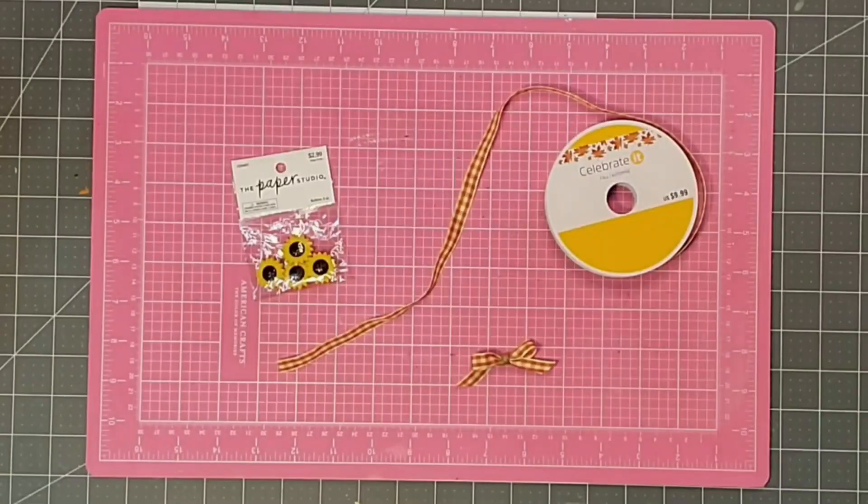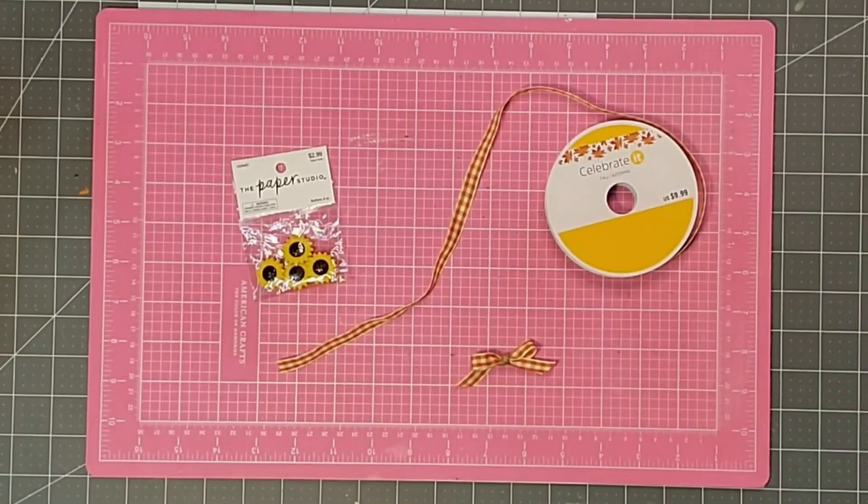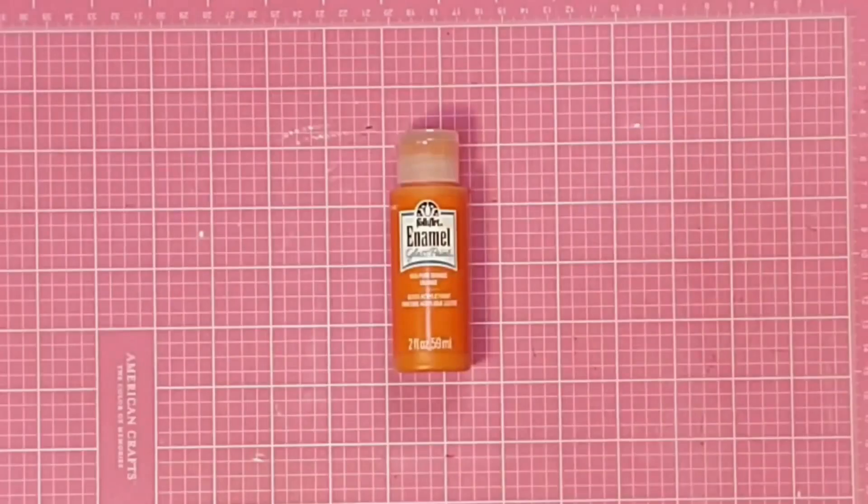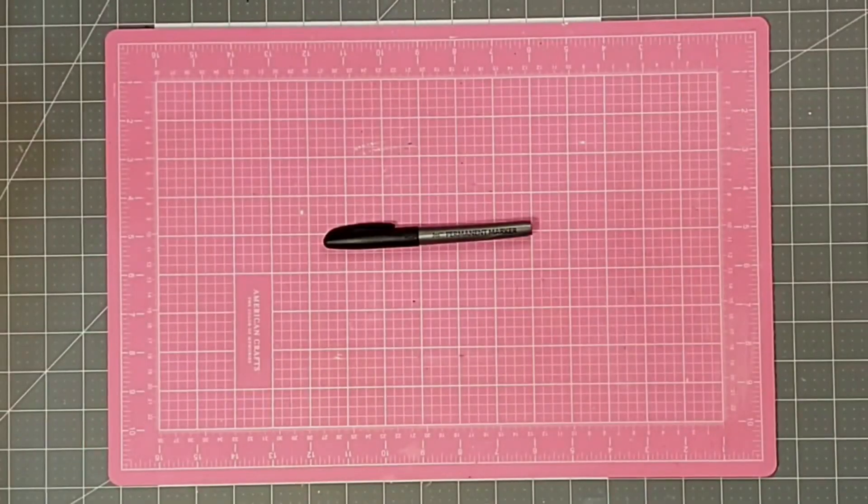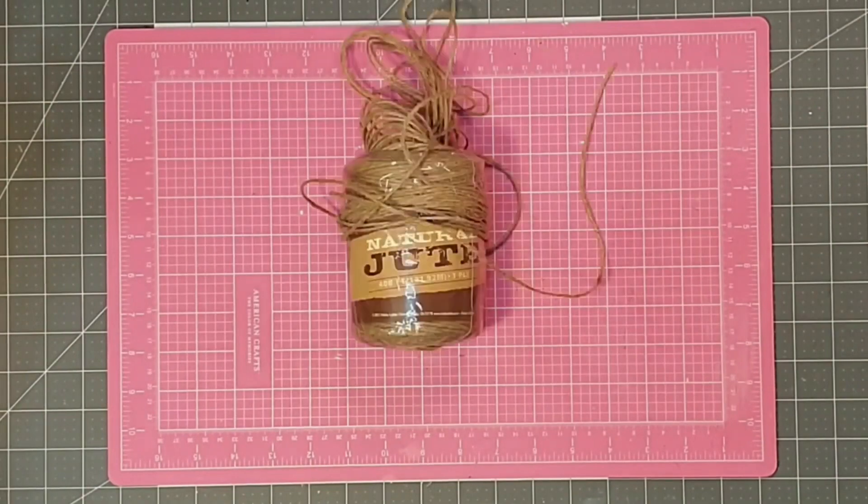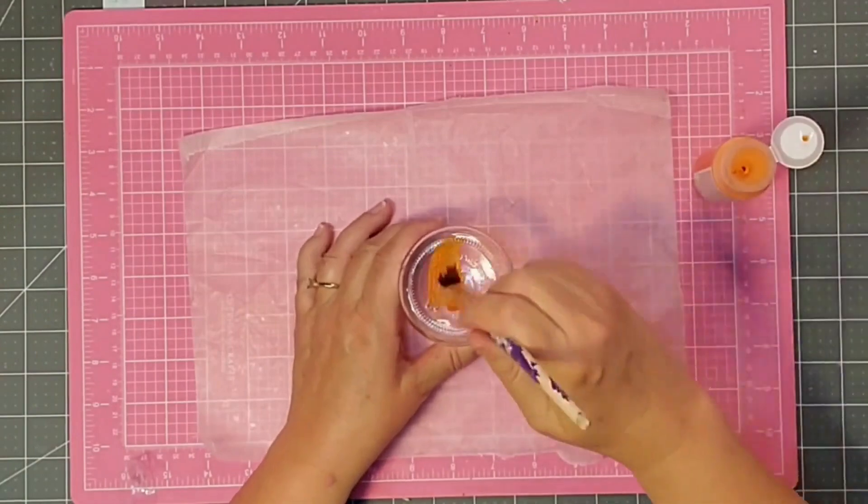To decorate my candle holder, I'm going to use some of this ribbon that came from Michaels, and also one of these buttons from Hobby Lobby. Some folk art enamel paint that is made especially for glass. I got mine at Walmart. My Jot permanent marker from the Dollar Tree, and finally some jute twine, and my hot glue gun.